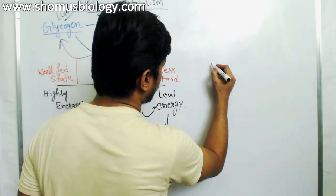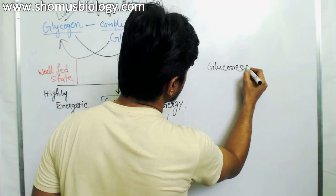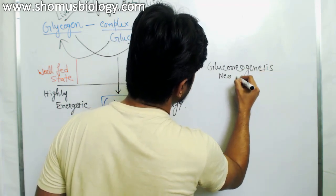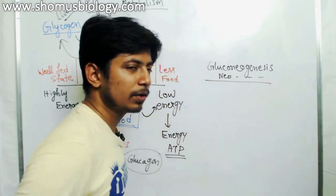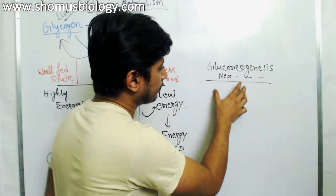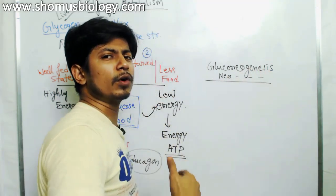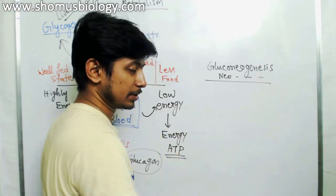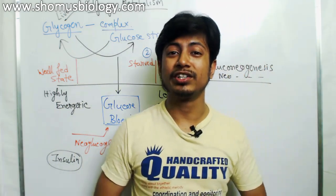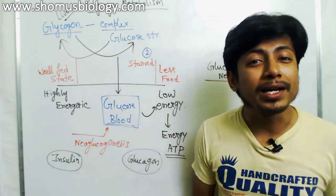Now in this video lecture I'm going to talk about another situation in our body known as gluconeogenesis, also known as neoglucogenesis. If you look at this name: 'gluco' is for glucose, 'genesis' means production. So in gluconeogenesis we are looking at the production or generation of glucose molecules.